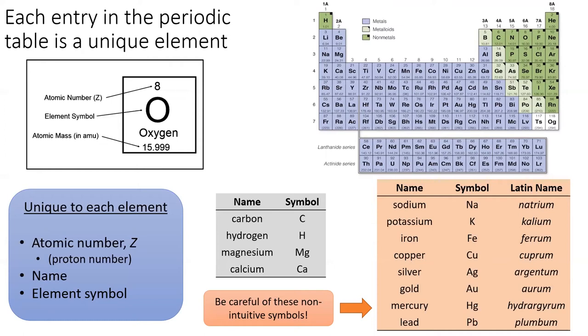Recall from the previous lessons that the element's atomic number is the number of protons in the nucleus, and the element's atomic mass is the average mass of all isotopes of that element.